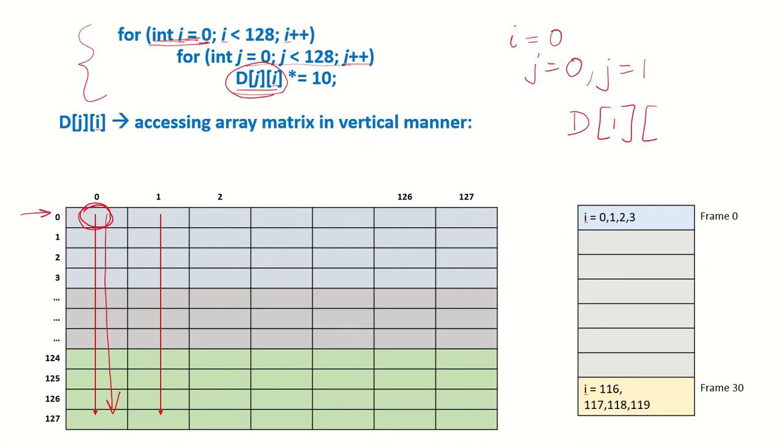But D[j][i] means first row and first column, sorry second row which is index 1 and this first column so this element. So we are actually accessing the array in this manner.